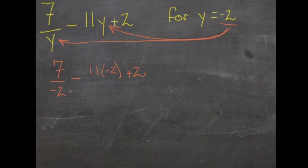Now it becomes an order of operations question. 7 divided by negative 2 is division, so it goes early. 7 over negative 2 is negative 3 and a half.